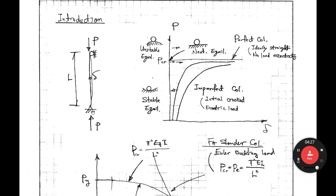For the introduction: this is a pin-pin column — pinned at the bottom, roller at the top. As P increases, if this column is perfect — meaning no initial imperfection and the load applied at the center with no eccentricity — then we can draw a P-delta curve like this. For a perfect column the load increases, and at a certain point it suddenly buckles. This point is called the bifurcation point, also called Pcr, the critical load. From here, this path is called the fundamental path: stable equilibrium.